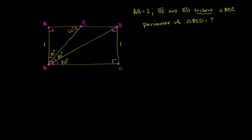This triangle has 30 and 90, so this other angle must be 60 degrees. This triangle also has 30 and 90, so it too must be 60 degrees — they all add up to 180. Both are 30-60-90 triangles. You can also figure out the angles of the inner triangle, although it won't be a right triangle. Knowing what we know about 30-60-90 triangles, if we have just one side, we can figure out the other sides.